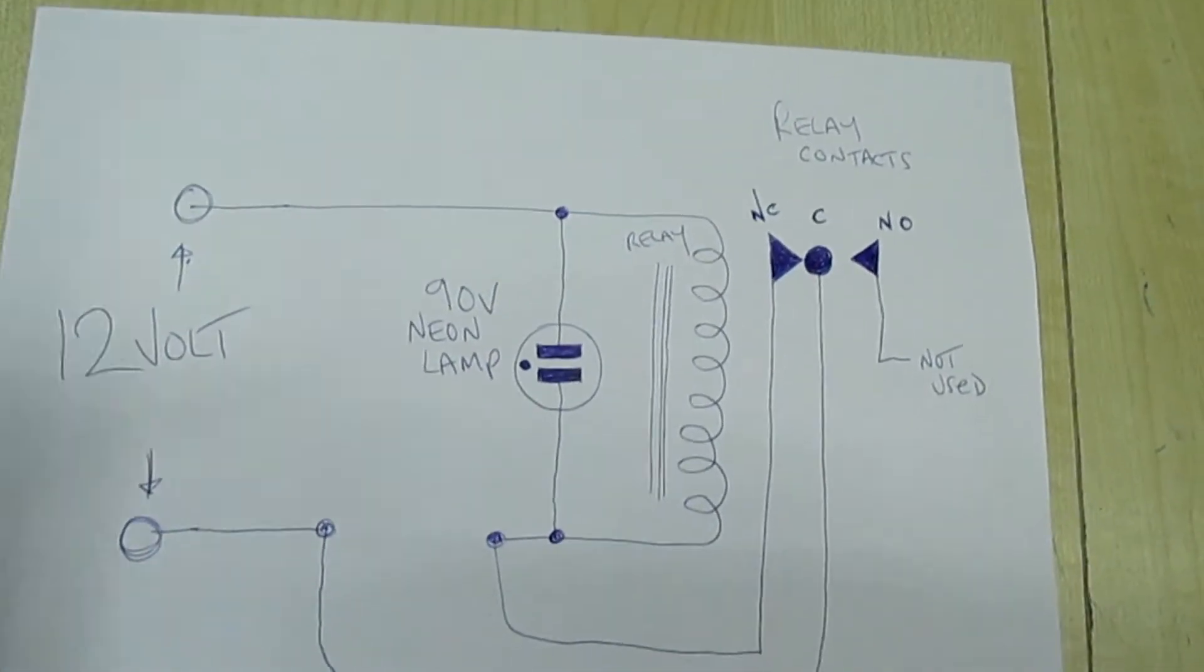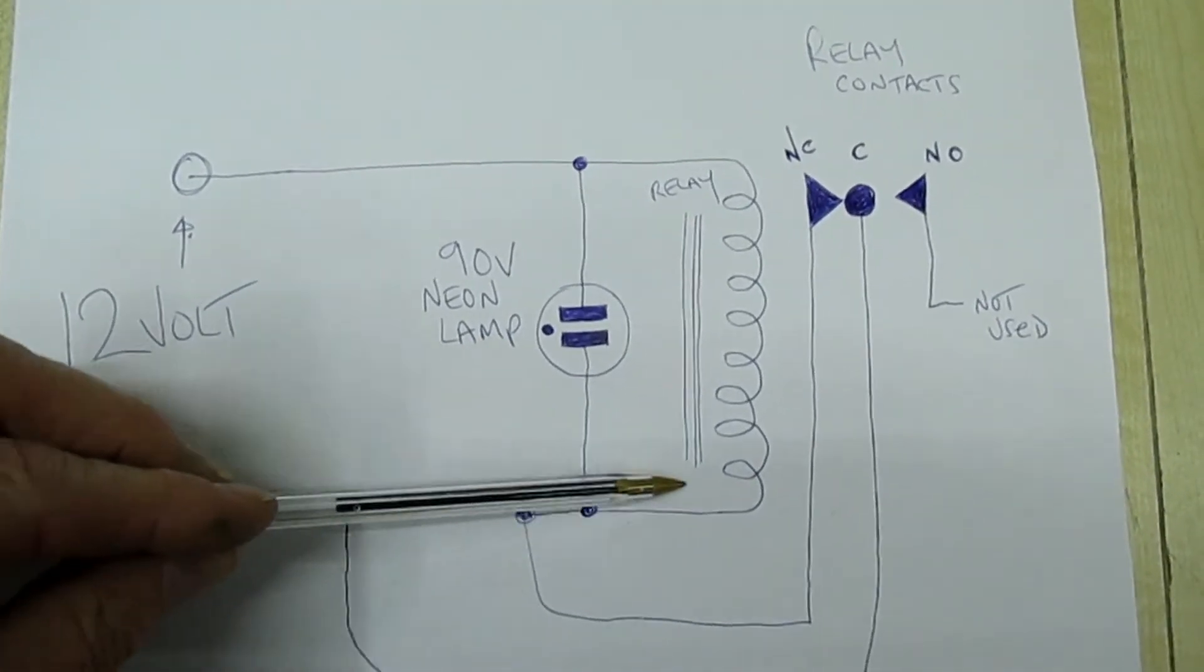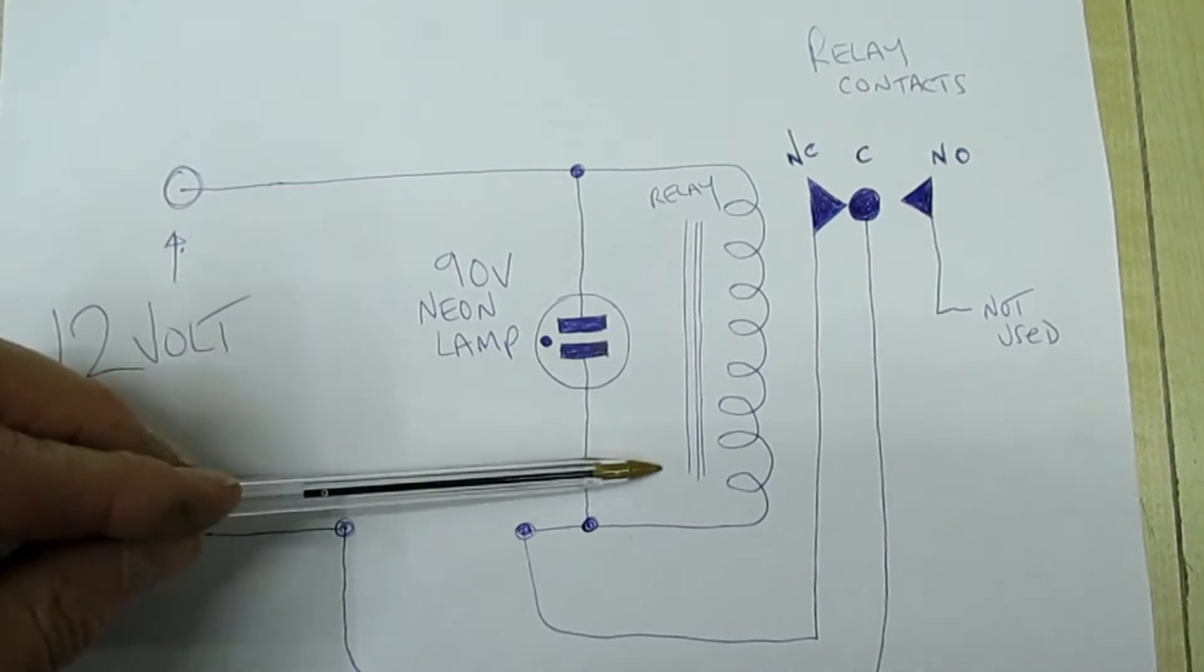So what we've done here, I've connected the 90 volt neon lamp across the relay coil. That's the inductive part.